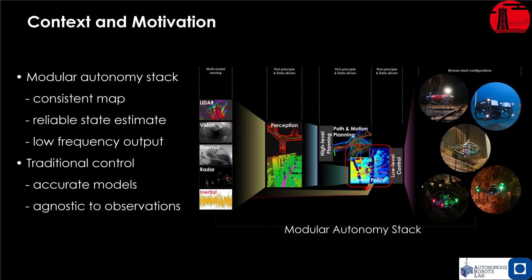Traditional autonomous systems often rely on a modular autonomy stack which requires a consistent map, reliable state estimates, and provides a low frequency output. Traditional control systems typically depend on accurate system models and are often agnostic to observations.